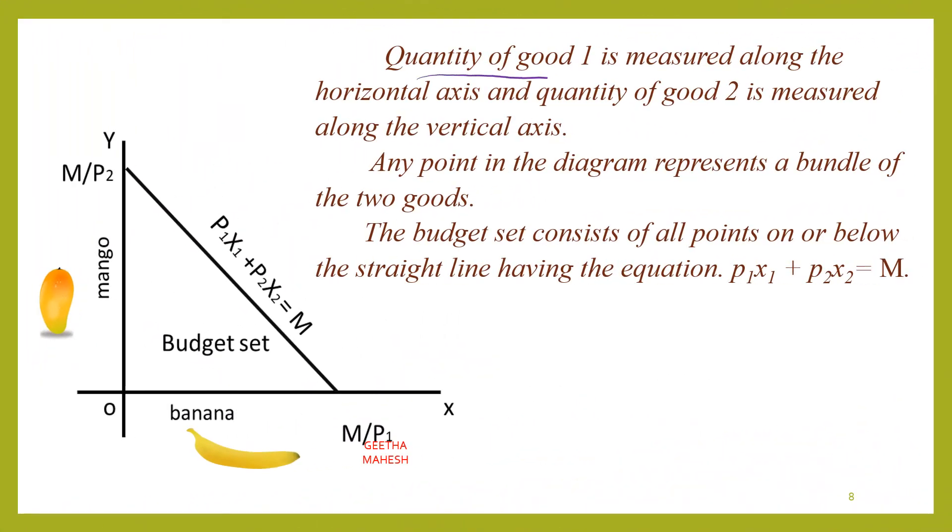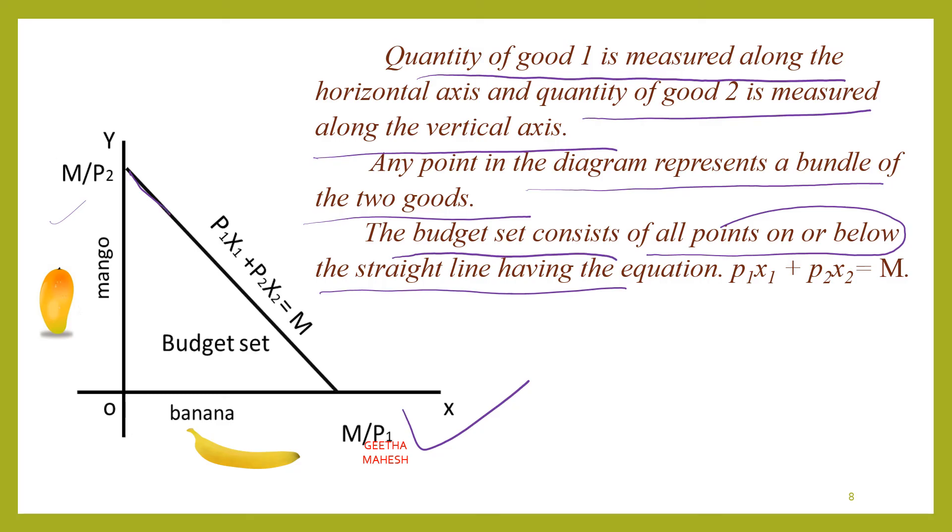So here, quantity of good 1 is measured along the horizontal axis and quantity of good 2 is measured on the vertical axis. Any point in the diagram represents a bundle of two goods. The budget set consists of all points on or below this straight line - this line is called the budget line. The equation we wrote, p1 x1 plus p2 x2 equals M, represents this budget line.